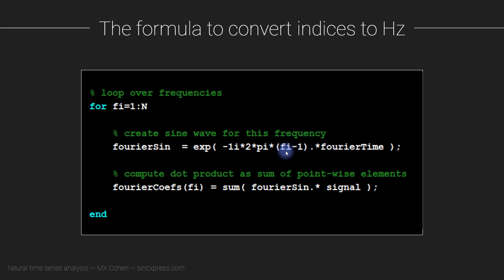The frequency of the sine wave is given by the looping index minus one. Notice that the units are not in Hertz — these are frequencies in indices. This is an important feature of the Fourier transform, because you want it to be a general operation that always works, regardless of whether you sample your data in milliseconds, days, or meters. That's why the time vector is normalized and the frequencies are given in indices, not in physically meaningful units like Hertz.